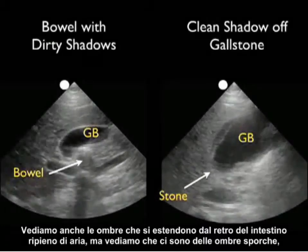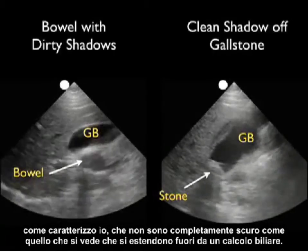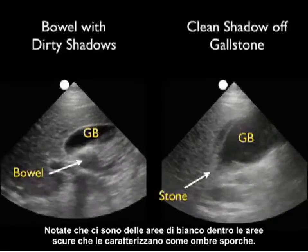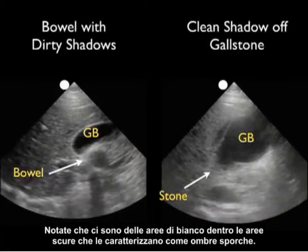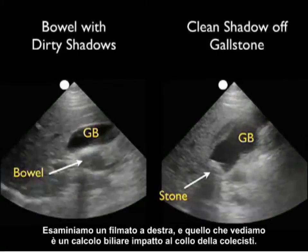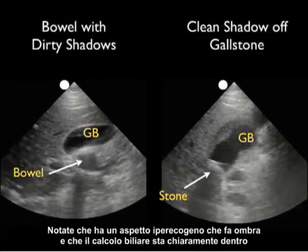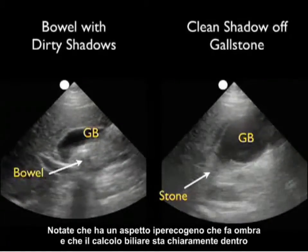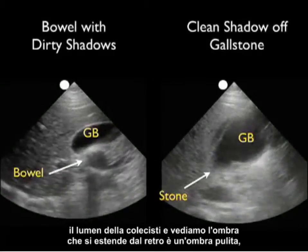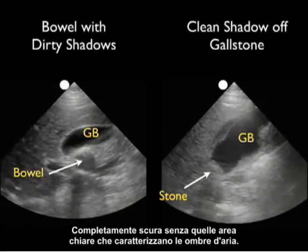Looking at the shadows off the air-filled bowel, we see dirty shadows — not completely dark as those seen off a gallstone — with areas of white within the dark regions characterizing a dirty shadow. In the right video clip, we see an impacted gallstone at the neck of the gallbladder with a hyperechoic appearance clearly within the lumen. The shadow coming off the back is a clean shadow, completely dark, without the light areas that characterize air shadows.